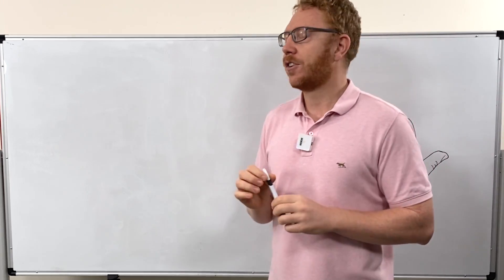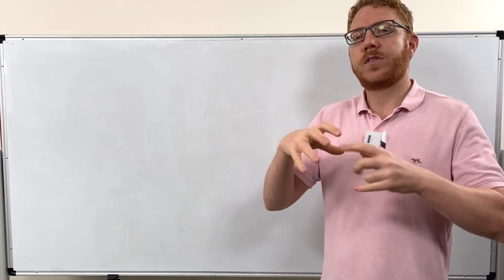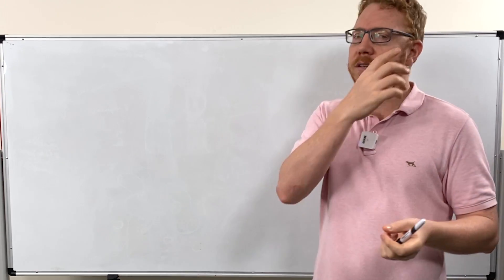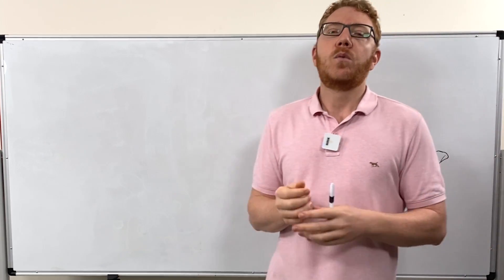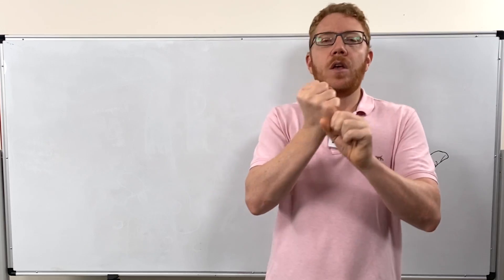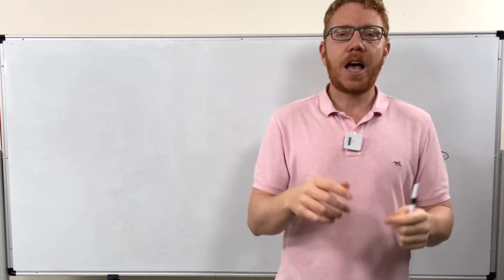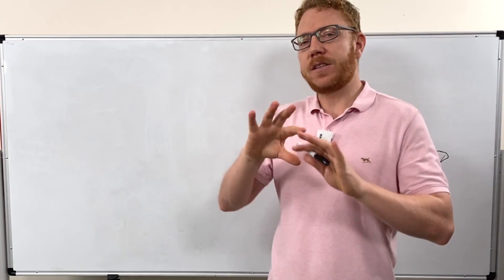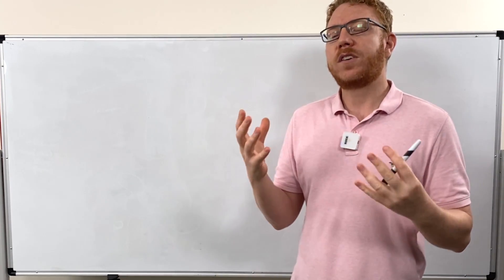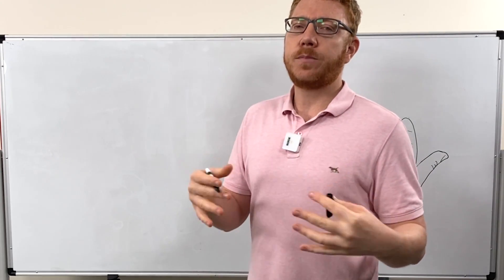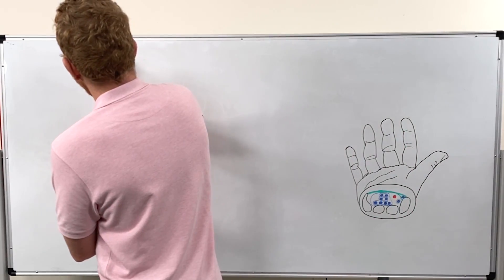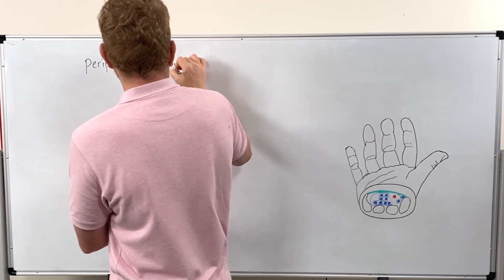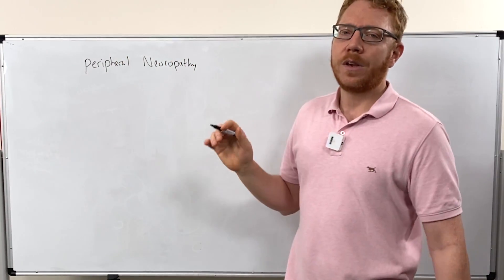So let's start with the definition. Carpal Tunnel Syndrome is a syndrome — a clustering or complex of clinical manifestations. It's to do with the compression, squashing, or tractioning of the median nerve in the carpal tunnel, which is in the wrist. In the textbooks and literature, it's known as a peripheral neuropathy — peripheral meaning outside, neuro meaning nerves, pathy meaning disease. So it's a disease of peripheral nerves — not spinal cord, not brain.